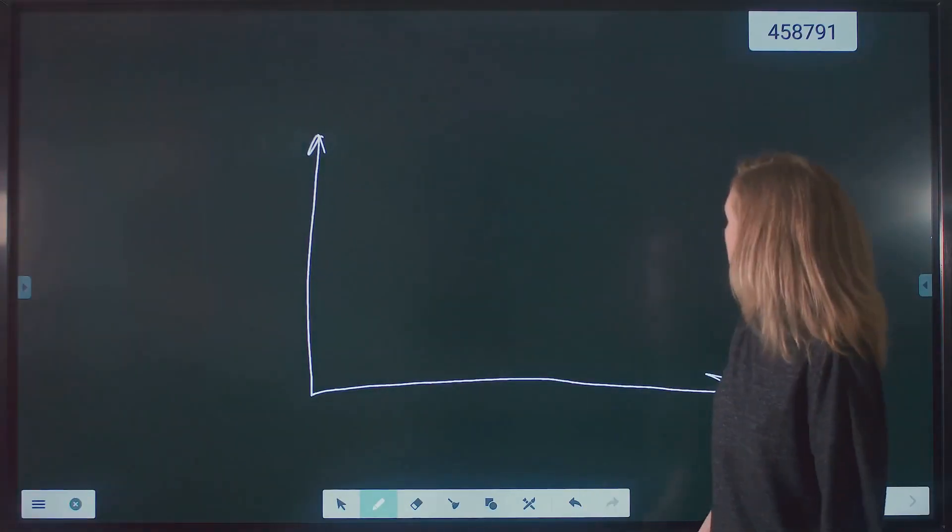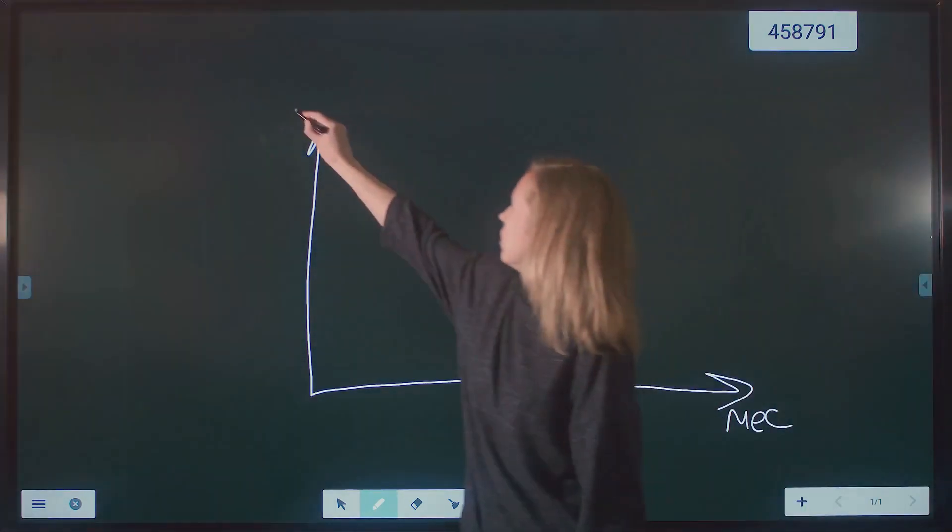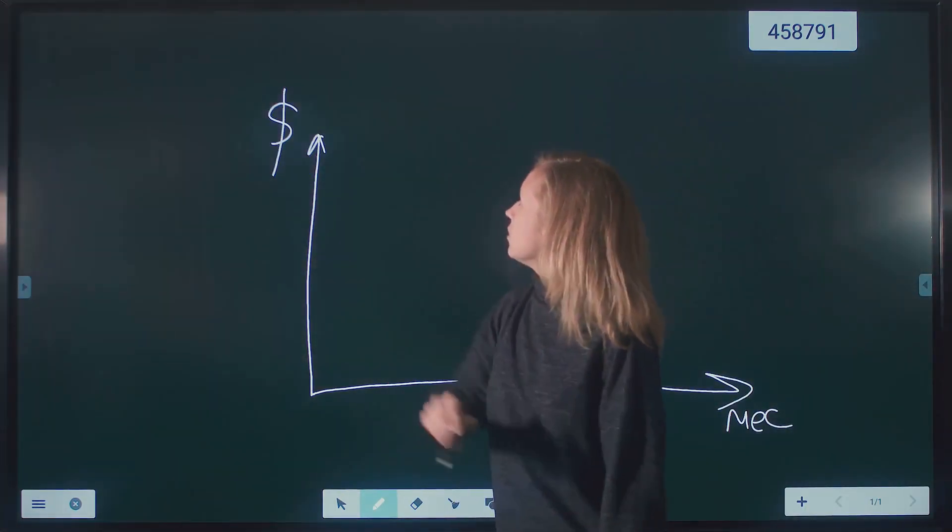To summarize, polynomial regression is a type of regression analysis that models the relationship between the independent variable and the dependent variable as an nth degree polynomial. It is a powerful tool for capturing non-linear relationships.